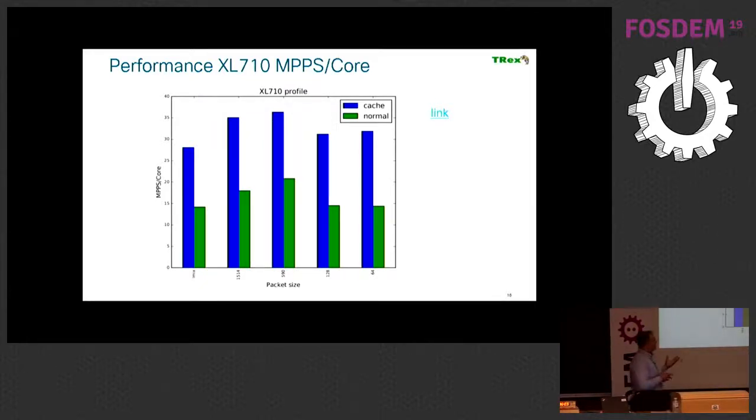This is the performance on the XL710 on one core. You can see we can reach 30 megapackets per second in one core, and it's linear scale. It's all about the performance.